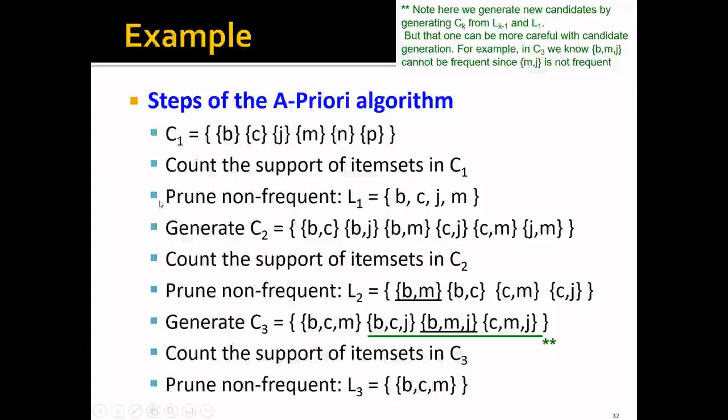Let's talk about it in a real example. And we can see that we can start from C_1, which are those individual items. And we will count the support of item sets in C_1 and prune the non-frequent ones and keep only the frequent individual items. And this is L_1. And until now, we have B, C, J, and M.